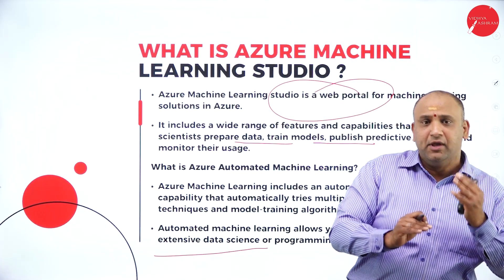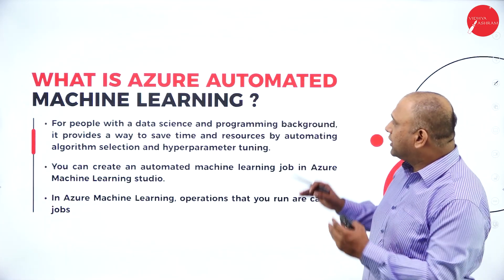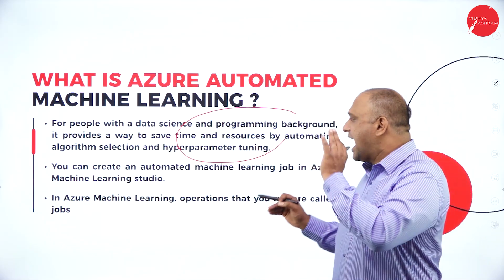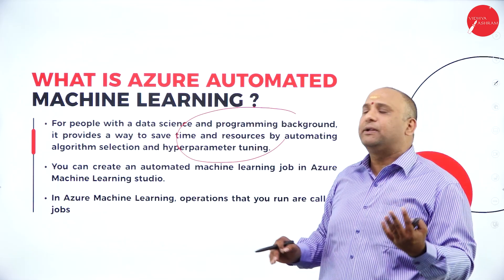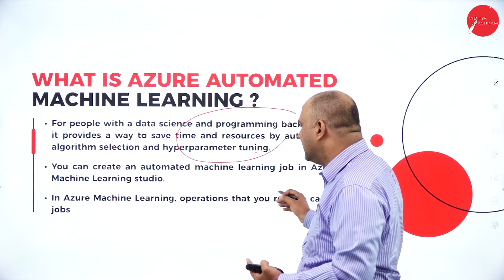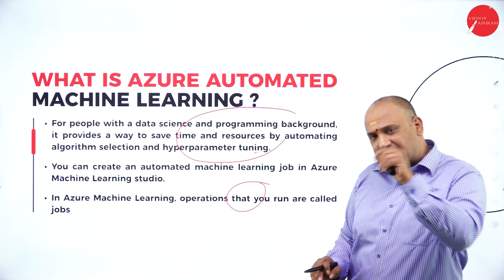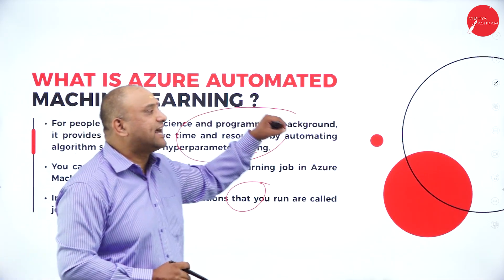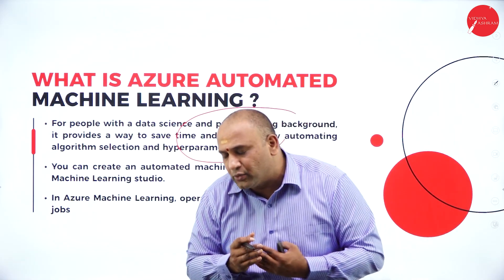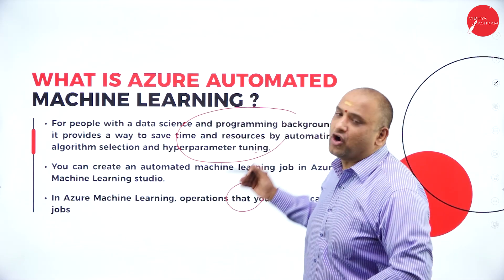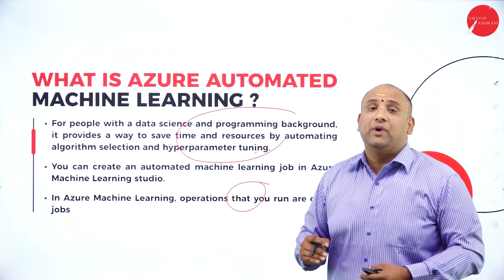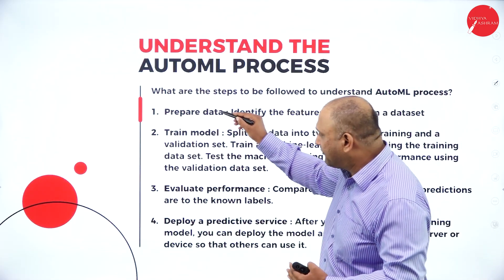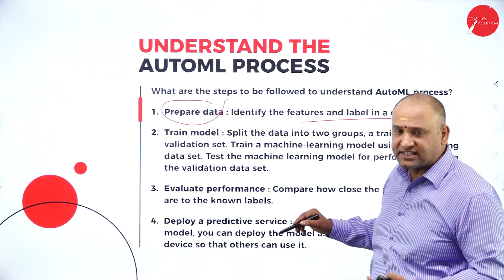In automated processing, we hold parameters to minimum values and ask the system to come up with maximum prediction. For people with data science and programming backgrounds, Azure automated ML saves time and resources, doing calculations by itself through hyperparameter tuning. The operations you run are called jobs. In AutoML, the first step is to prepare the data — identify the features of the dataset. Then train the model by splitting the data into two groups: a training set and a validation set.